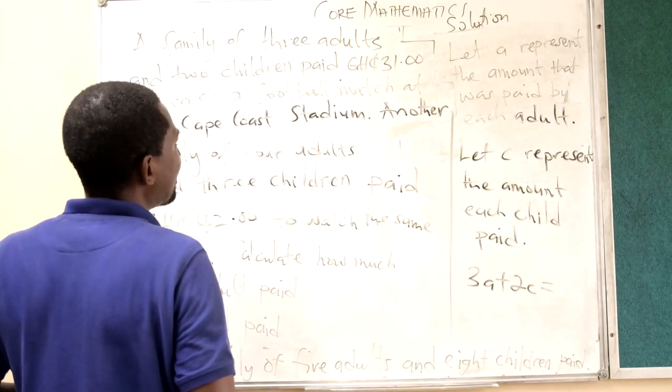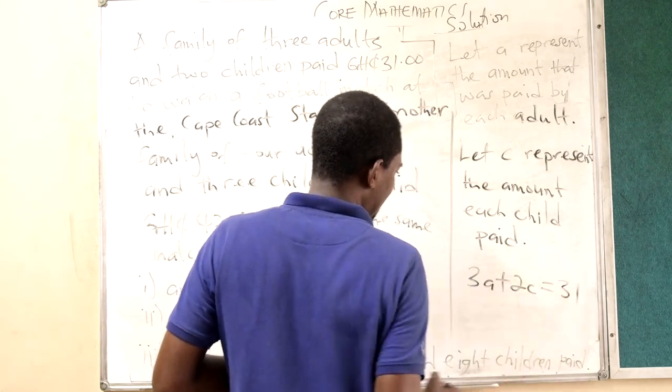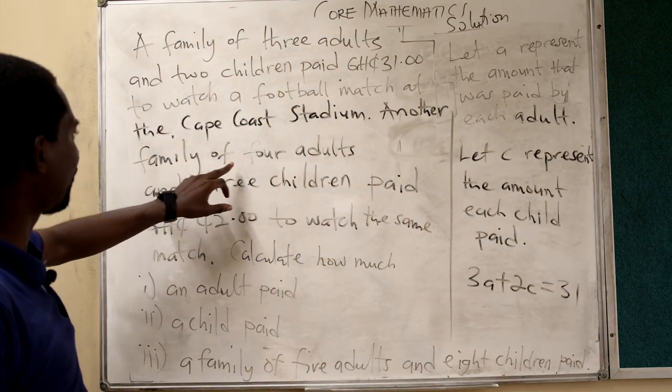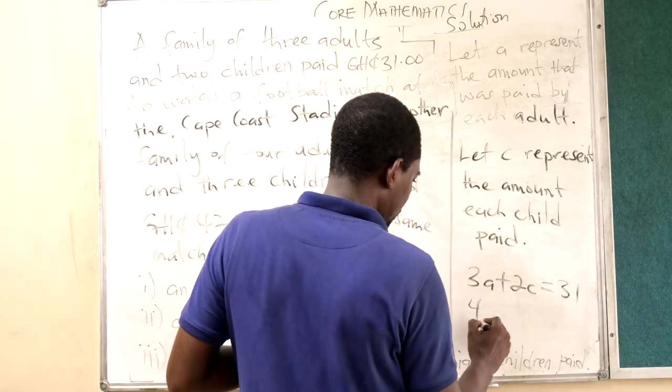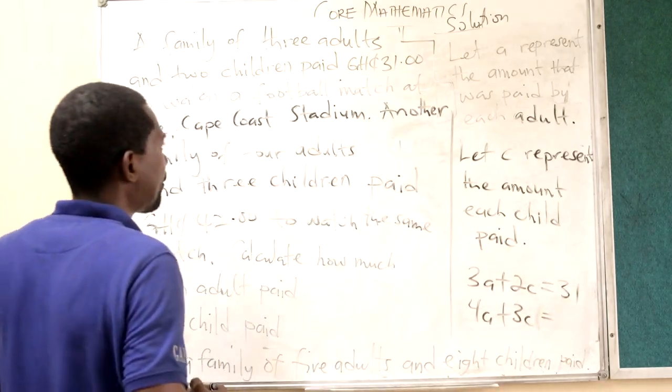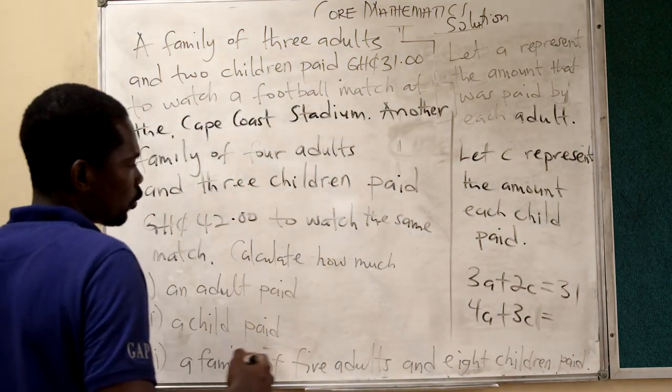And they paid 31 cedis. And if you look at the second family, there were four adults and three children. And they paid 42 cedis.